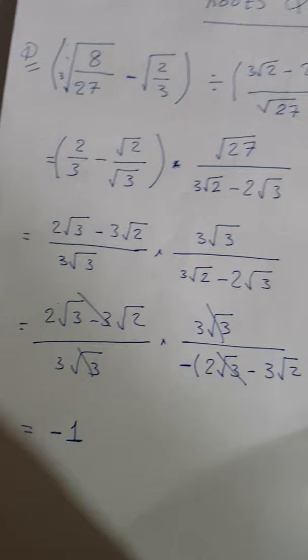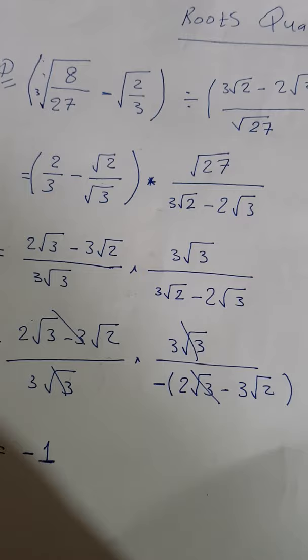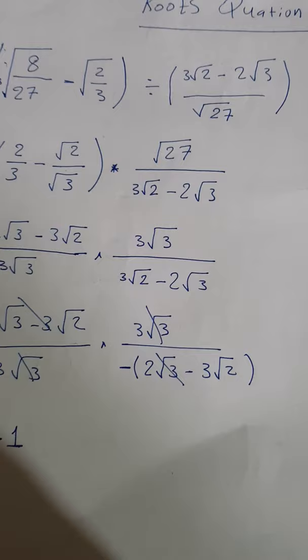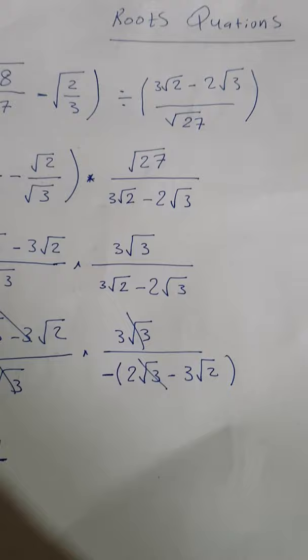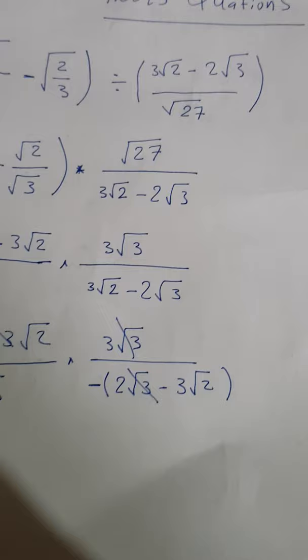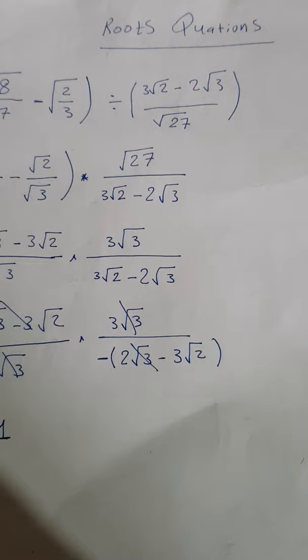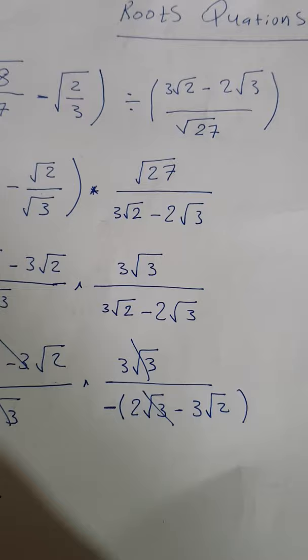Multiply — we convert the division sign to multiplication. We inverse part two. How? Twenty-seven under the square root, which is in the denominator, goes to the numerator, and three squared under the square root, minus two cubed under the square root, goes down to the denominator.